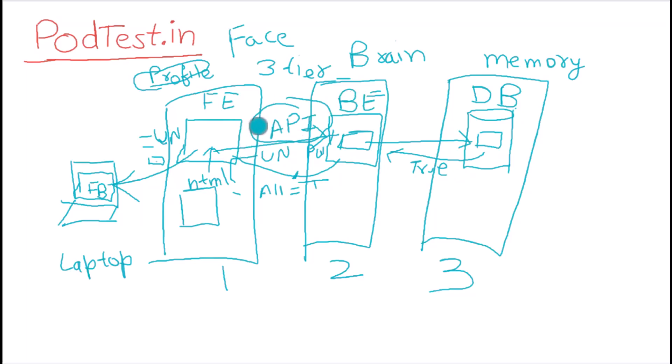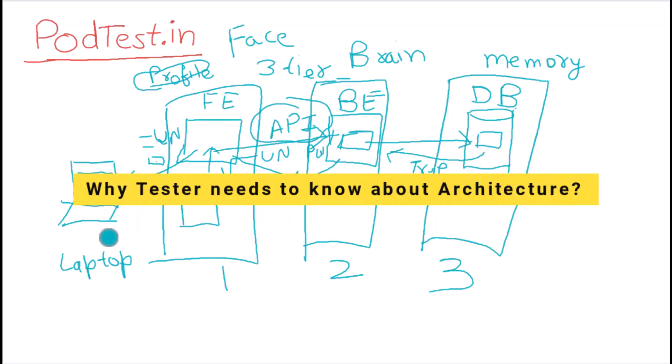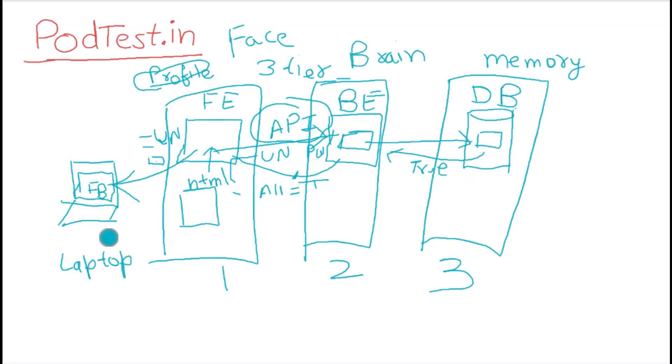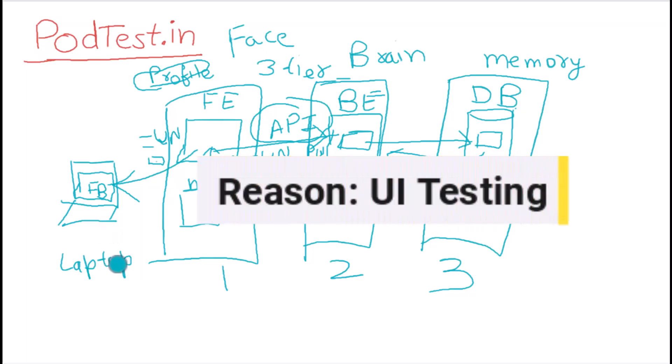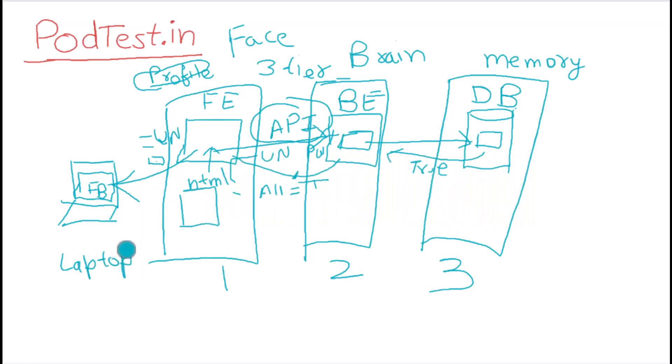You might ask: why does a tester need to know all this? This is not my area of work. That assumption is not correct. When you are testing a feature on the UI — say you are submitting details on a page and clicking a done button — you need to understand where the data is going. It is not consumed on the UI itself; it has to be sent somewhere.